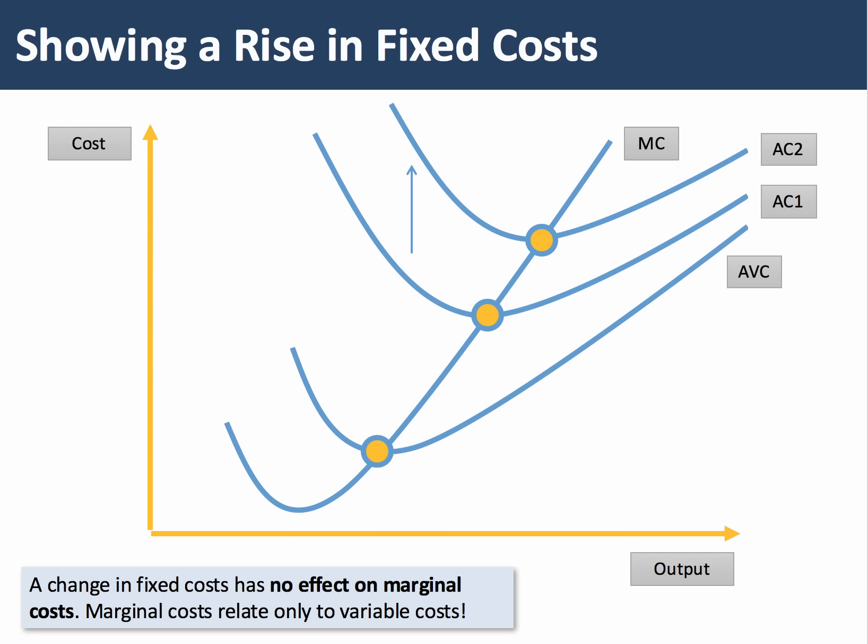Diagram three refers to costs, and in particular a change in fixed costs — something students often don't get right. For example, if business insurance increases or the rate of depreciation of capital accelerates, there is no change in marginal cost. Marginal cost relates only to variable cost. Therefore, a rise in fixed costs shifts the average cost curve up from AC1 to AC2, but there's no change in marginal cost or average variable cost.